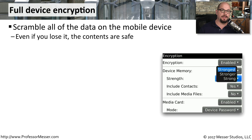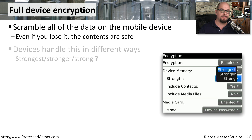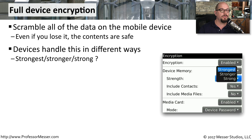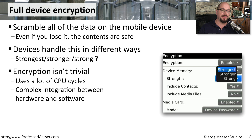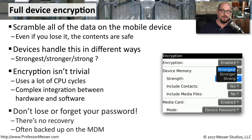A technology becoming increasingly popular is full device encryption. All of the data stored on the mobile device is protected — if you lose the device, nobody can gain access to that encrypted information. Different mobile devices and operating systems handle this in different ways; in Android you can configure strong, stronger, or the strongest type of full device encryption, and Apple's iOS has similar functionality. This encryption is a complex interaction between the hardware and the software and data on the device. One challenge is that if you lose the passphrase or key that encrypted the data, you lose all access to everything on that device. That's why most mobile device managers will back up these keys, so there's always a way for the security manager to gain access to the data.